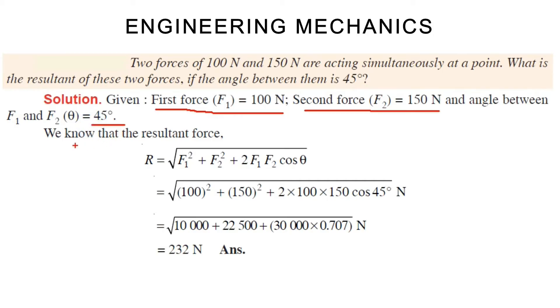Now the solution. We know that the resultant force formula is R equals root of F1 squared plus F2 squared plus 2 times F1 times F2 times cos theta. This is the formula to find out the resultant force.